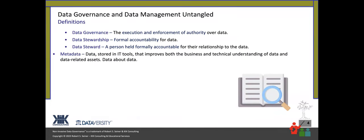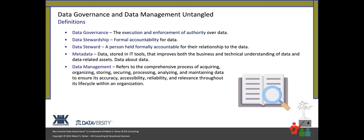Let's start with a bunch of definitions. Data governance is truly the execution and enforcement of authority over data. Some people cringe when they hear that definition, but you have to word your definition of data governance strongly. At the end of the day, you need to execute and enforce authority — leadership is telling you that you have to govern your data. Stewardship is the formalization of accountability for data. People define, produce, and use data as part of their everyday jobs. If they're being held accountable for what they are doing with the data, they become stewards of the data. It's not something people can opt into or opt out of.